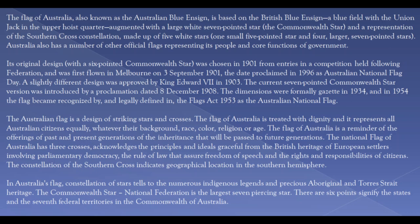The flag of Australia, also known as the Australian Blue Ensign, is based on the British Blue Ensign — a blue field with the Union Jack in the upper hoist quarter, augmented with a large white seven-pointed star called the Commonwealth Star, and a representation of the Southern Cross constellation made up of five white stars: one small five-pointed star and four larger seven-pointed stars.